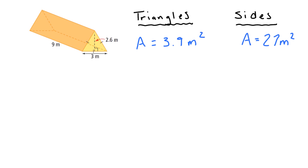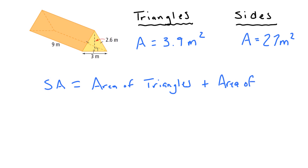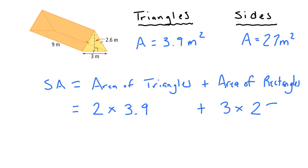Now we have our calculations for the area of each side, but we still need to find the surface area. Surface area is just adding up all these sides: surface area equals the area of the triangles plus the area of the rectangles. For the triangles, 3.9 is just one triangle — not both — so I go two times 3.9. For the rectangles, the area is 27 and there are three identical ones, so I go 3 times 27.